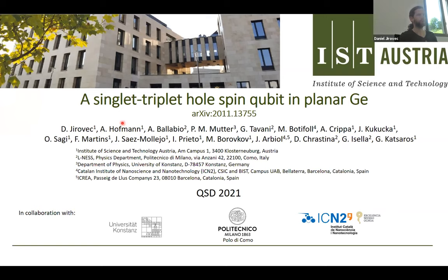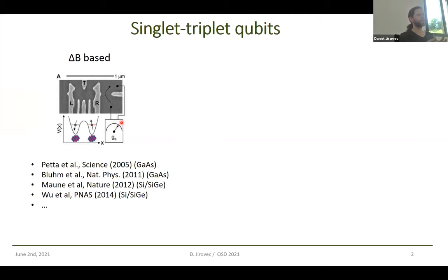Singlet-triplet qubits have been around for quite some time. What you need is two spins that make the singlet-triplet states — they interact via the exchange interaction — and the other thing you need is a Zeeman energy difference between them. This can be achieved in different ways. For example, you can have magnetic field differences generated by the local Overhauser field of the nuclei in gallium arsenide.